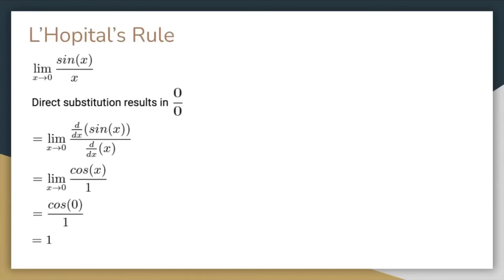Here's an example of L'Hopital's rule. If you plug in x equals 0 into this limit, you get an indeterminate form. So L'Hopital's rule states that you can differentiate the numerator and denominator. In this case, you get cosine of x over 1. Now you can use direct substitution, and you get the answer of 1.